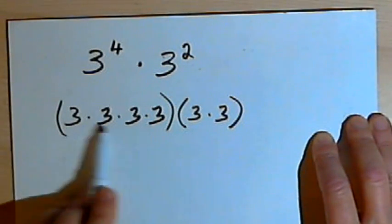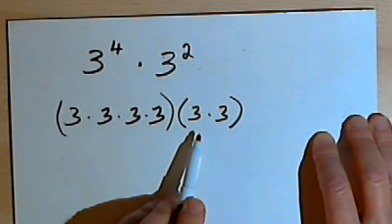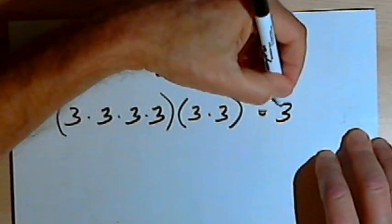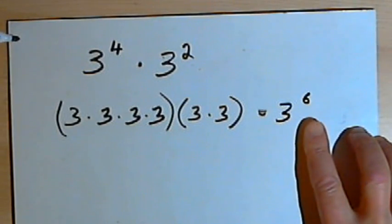And that means I'm going to repeat this multiplication a total of 6 times. So this is going to equal 3 with the exponent 6, 3 raised to the sixth power.